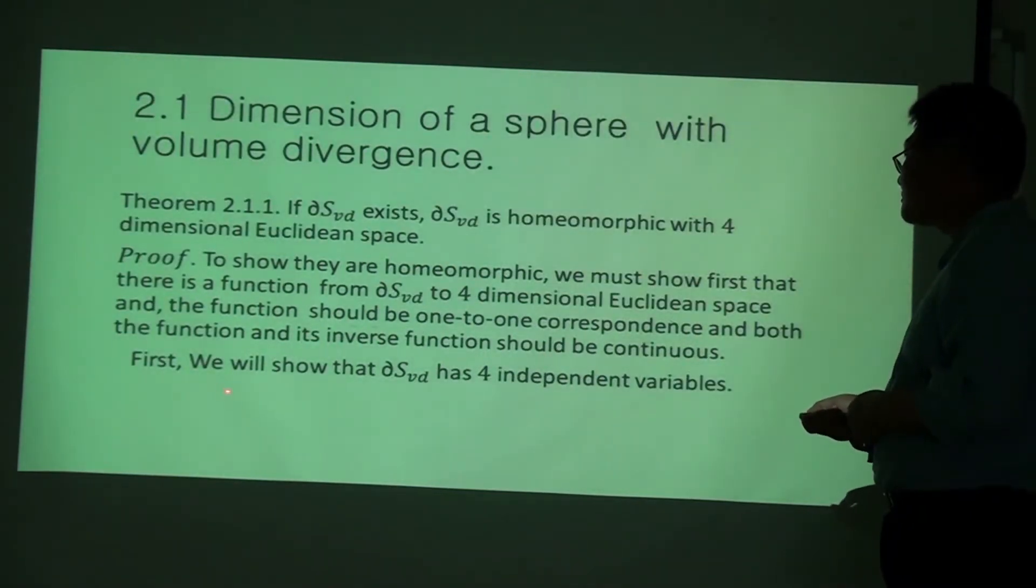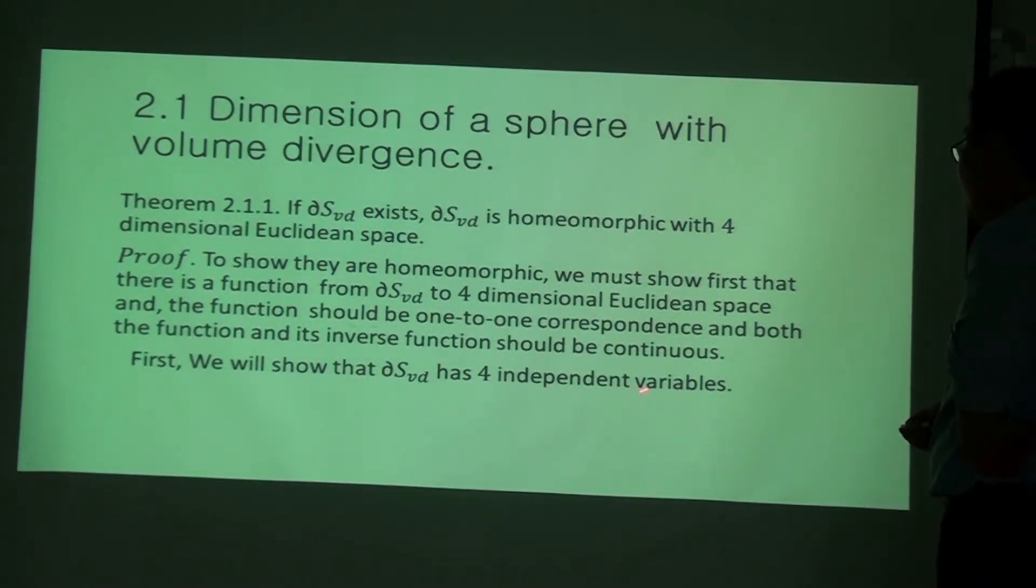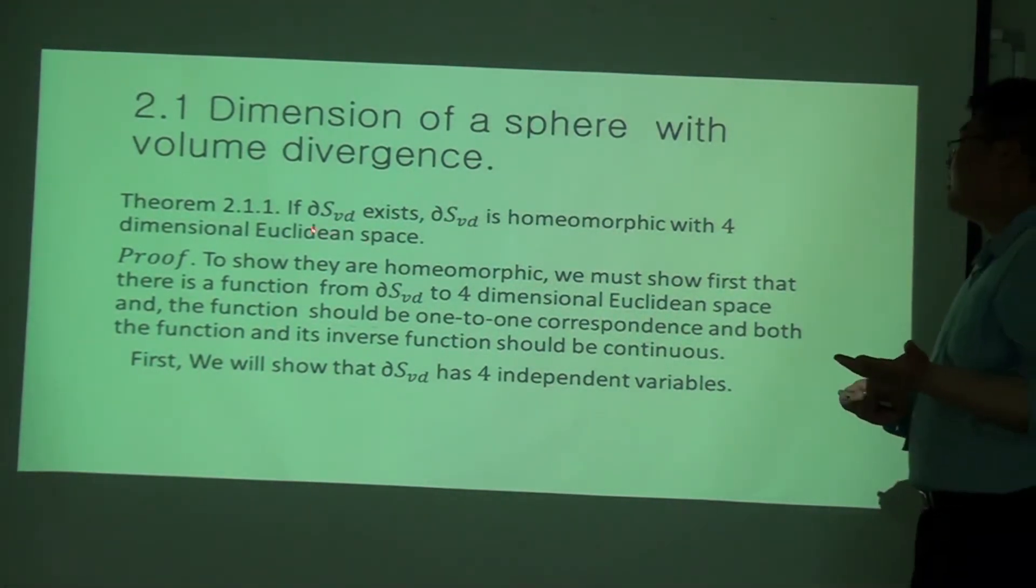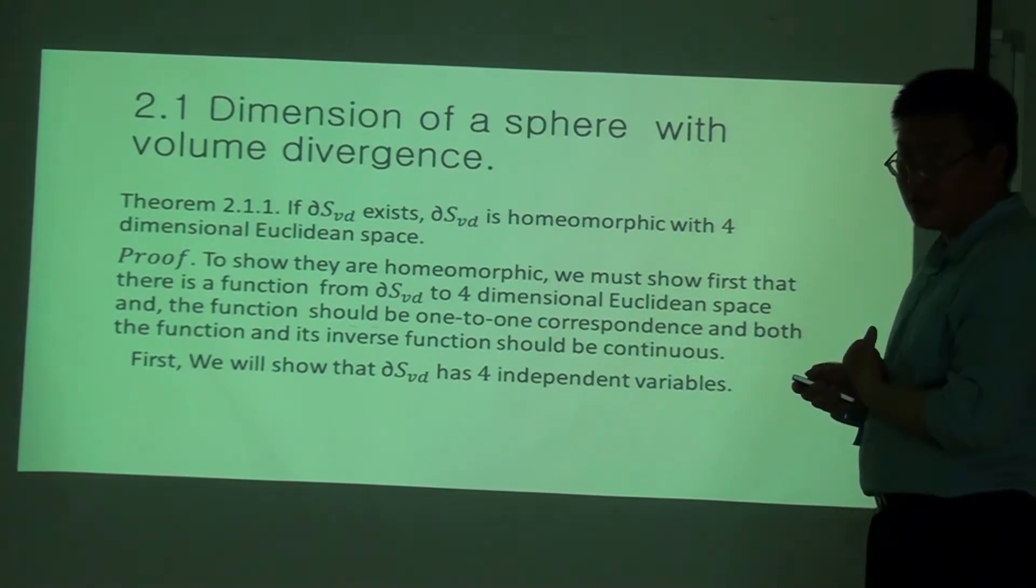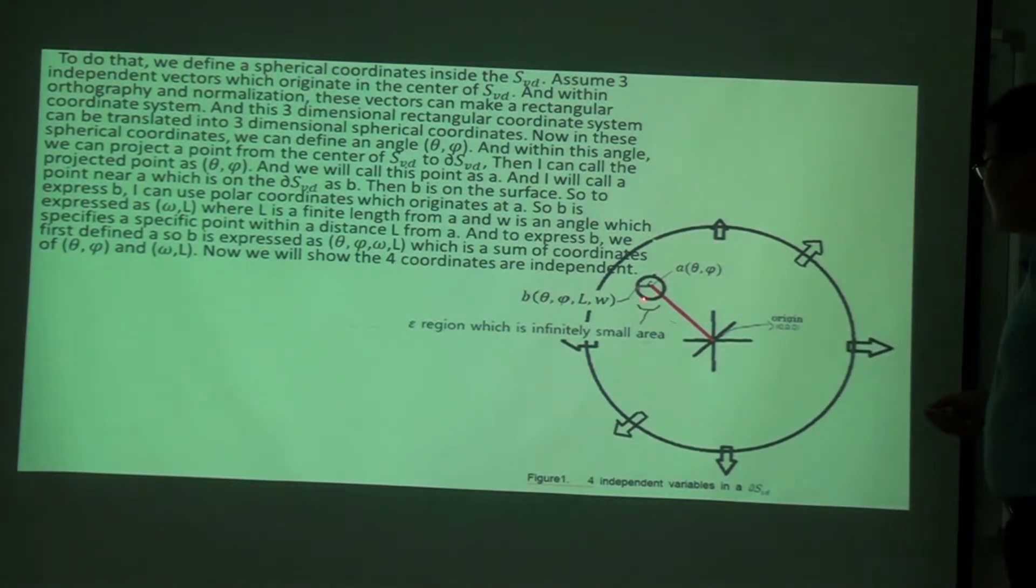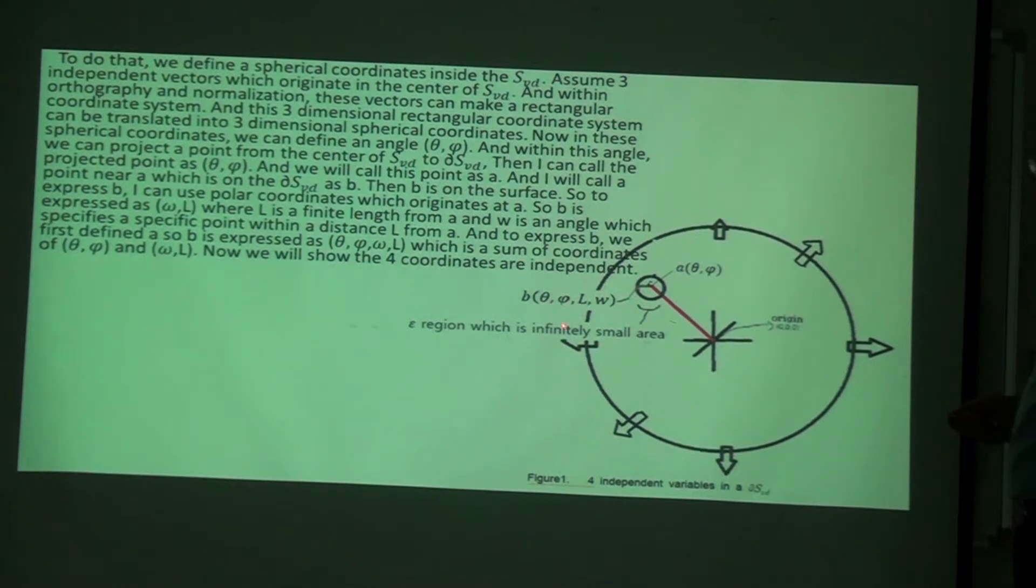We should know that the sphere with volume divergence exists. Denote S_vd is a sphere with volume divergence, and S_v1 is a sphere with volume one. And our approach is S3 with volume divergence and S3 should be dual to each other.